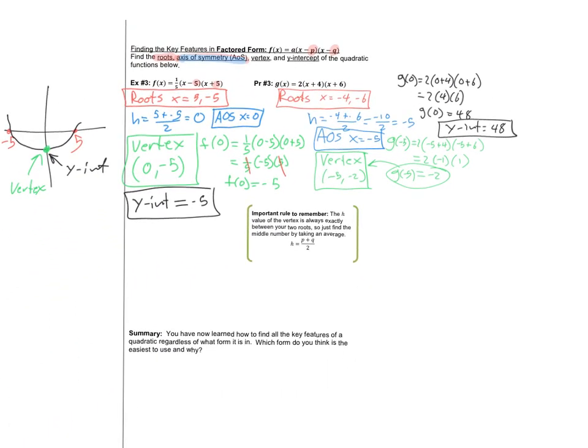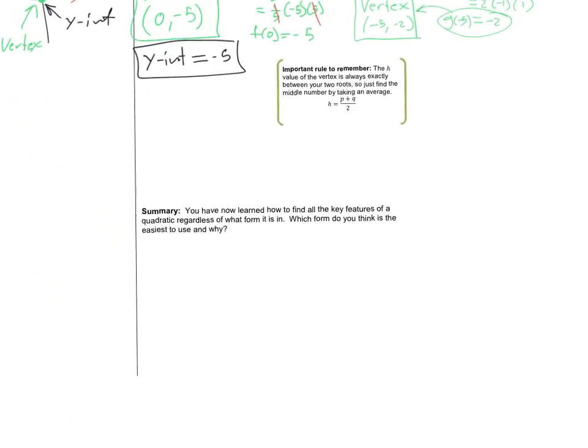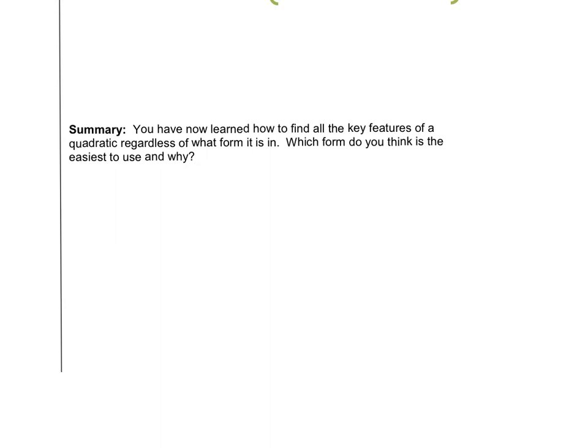Here's a summary: you've now learned how to find all the key features of a quadratic regardless of which form it's in. Think about which form — standard, vertex, or factored — you think is the easiest to use and why. See you in the next video.